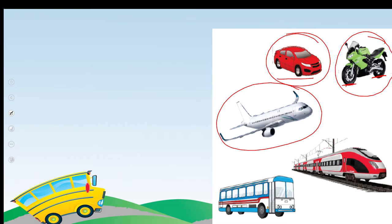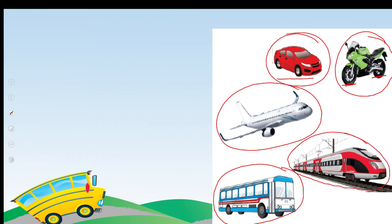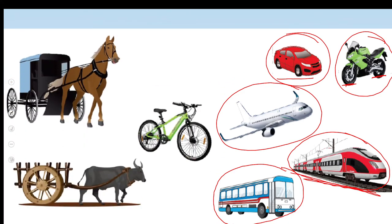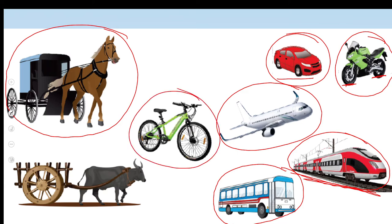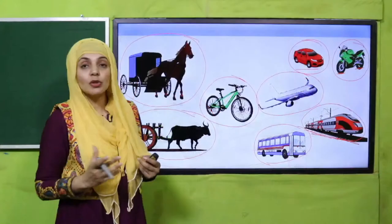And what is this? This is an aeroplane — and does it run on the road? No, it flies in the air! Very good! What is this? This is a bus, very good! And this is a train — where does it run? On the railway track, very good! Next — what is this? This is a tonga, very good! And what is this? This is a bicycle. And this? This is an ox cart — belgaadi. So students, you have identified all the means of transportation.